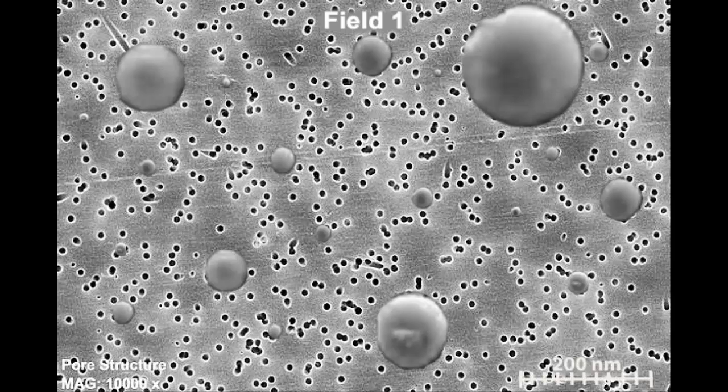To measure these particle size distributions, we must first collect samples. Samples are collected using air samples with filters and battery-operated pumps. During sampling, air is pulled through the filter and particles that are in the air are captured on the filter. The filter may then be viewed using a scanning electron microscope, otherwise known as an SEM.